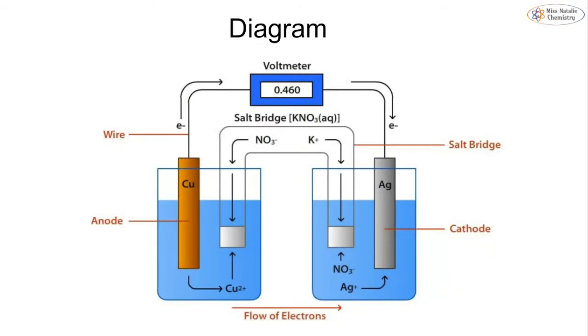Just a diagram of what it should look like. This is using a copper and a silver cell, and we've got our copper metal in our copper solution and our silver metal in our silver solution. And we have our potassium nitrate salt bridge as well, of course, being connected to our voltmeter. And we get our electrons flowing from the copper through the voltmeter to the silver on the other side.